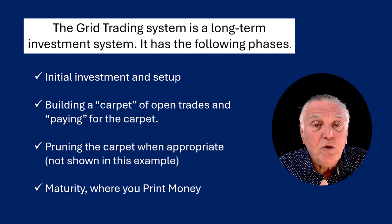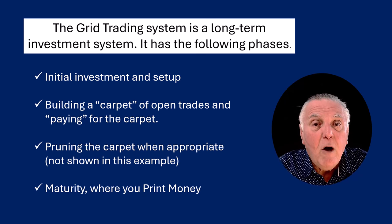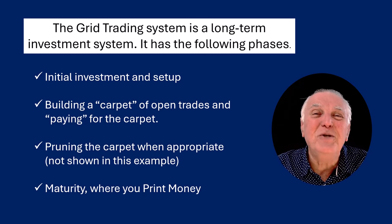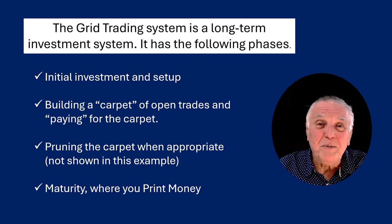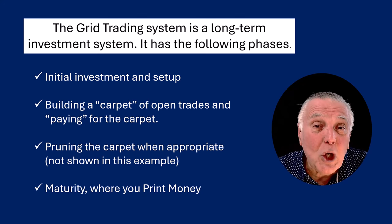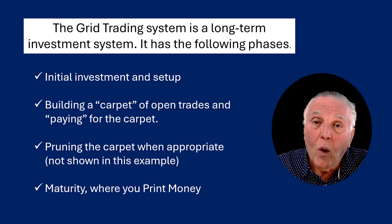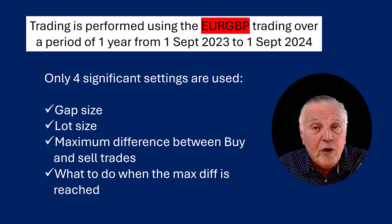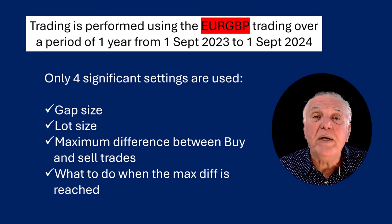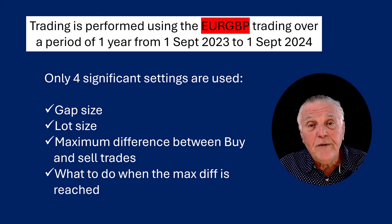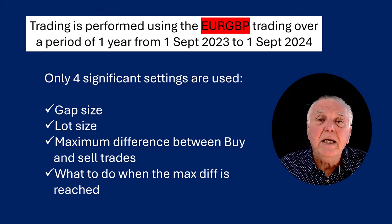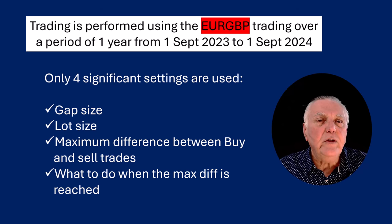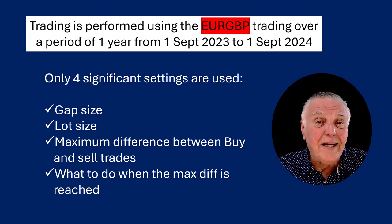Once you've gone through this process, you reach a point where you're printing money because your carpet has been paid for and the price is moving on it nicely. Sometimes this can take a couple of months to reach that maturity level. Remember, this is not traditional scalping or swing trading — it's an investment approach. In the example we're going to use the Euro/Pound trading over a period of one year.